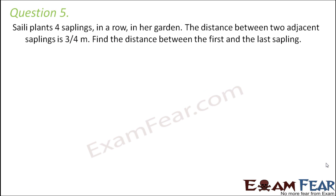Question number 5. Sally plants four saplings in a row in her garden. The distance between two adjacent saplings is 3 by 4 meters. Find the distance between the first and the last sapling.